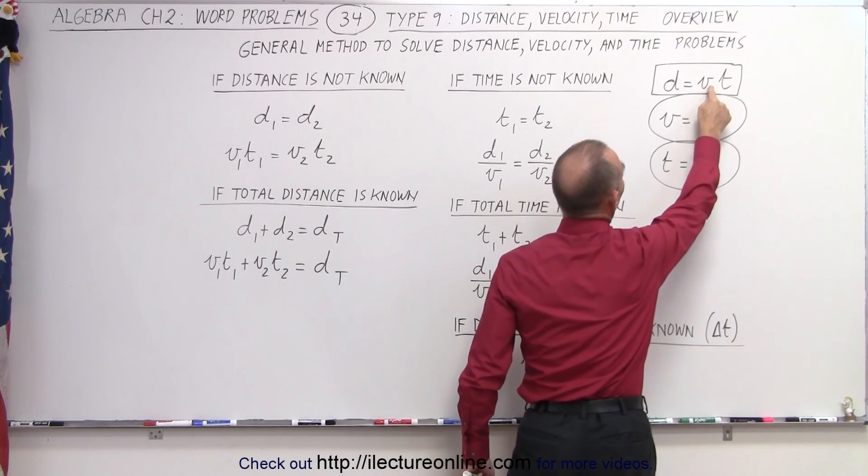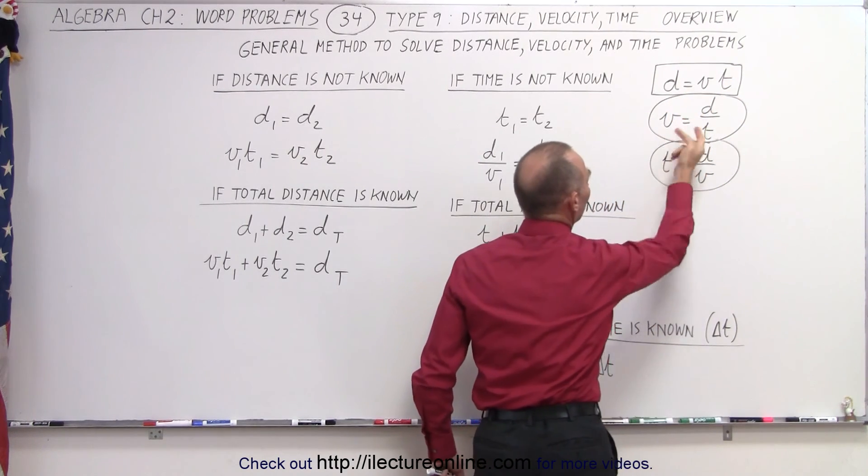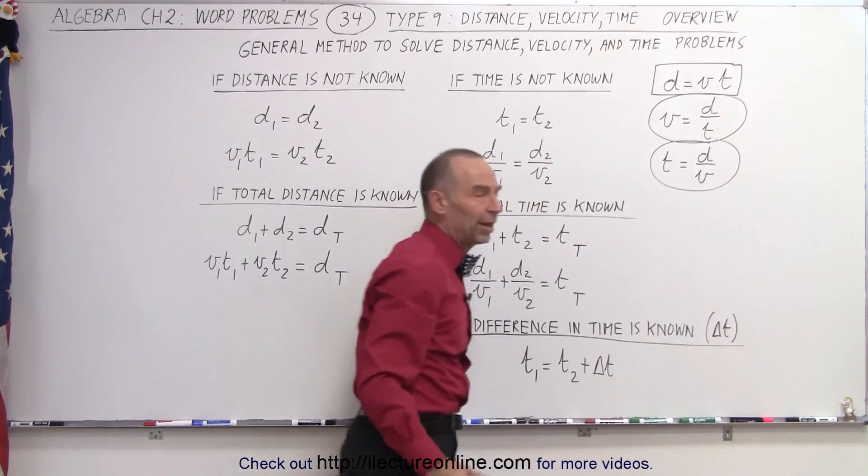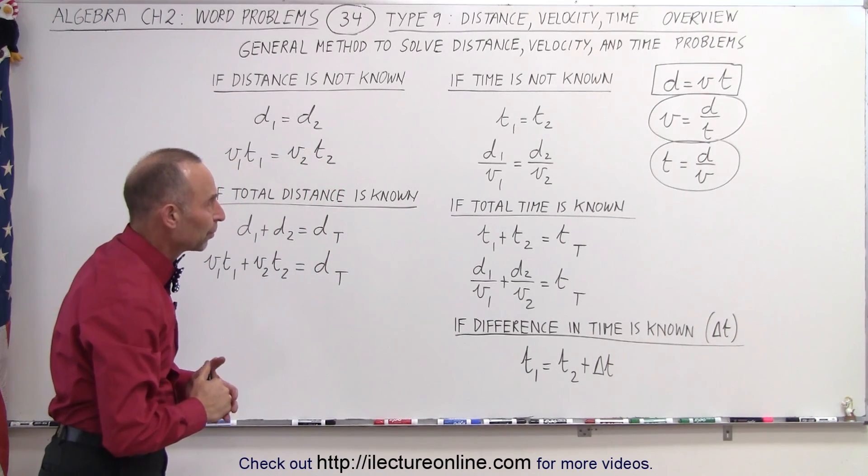All we have to do to solve for velocity is move the t in the denominator, turn the equation around, or to solve for t, move the v in the denominator and turn the equation around. So you can see it's easy to derive any one of those three equations.